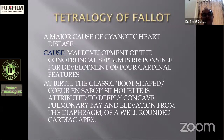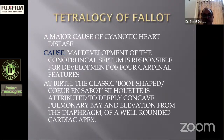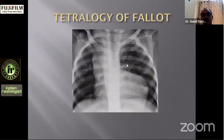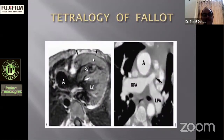Tetralogy of Fallot is a major cause of cyanotic heart disease. Maldevelopment of the conotruncal septum produces four cardinal features: right ventricular hypertrophy, a large subaortic VSD, overriding of the aorta over the VSD, and pulmonary valvular stenosis. Without VSD the overriding is also absent, and with an ASD added it becomes trilogy of Fallot; with all four features plus ASD it is pentology of Fallot. The classic coeur en sabot (boot-shaped) silhouette is due to a deep concave pulmonary bay and elevation from the diaphragm of a well-rounded cardiac apex. The chest X-ray shows a right-sided aortic arch, cardiomegaly, deep concave pulmonary bay, elevated upturned cardiac apex, and oligemic lung fields.